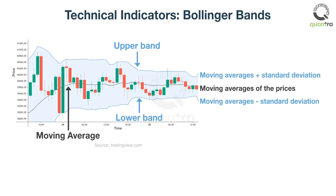The standard deviation tells how the prices are dispersed from its mean price. The moving averages and standard deviations are used to create Bollinger Bands. So if you are doing technical analysis, you will frequently find usage of such statistical and mathematical terms, and understanding them is crucial for a thorough analysis of the strategy.